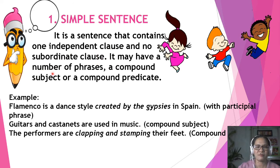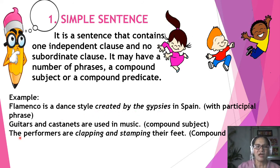It may have a number of phrases, a compound subject, or a compound predicate. Example: Flamenco is a dance style created by the gypsies in Spain — with participial phrase 'created by the gypsies'. Guitars and castanets are used in music — guitars and castanets are a compound subject. The performers are clapping and stomping their feet — clapping and stomping are compound predicate.